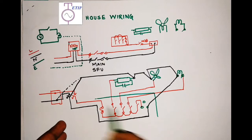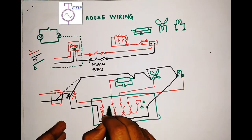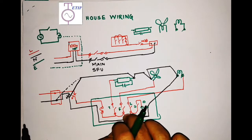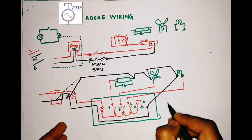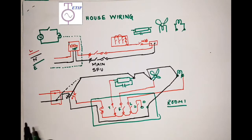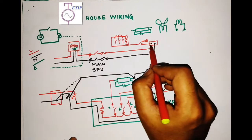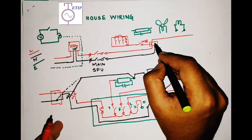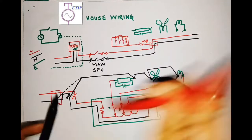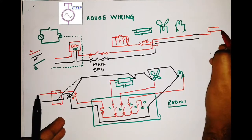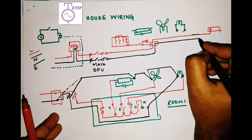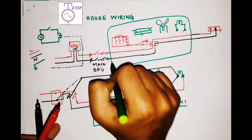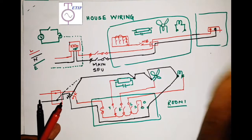So your switchboard will have switches for the tube light, fan, lamp, and socket — by operating each switch you can control the respective load. This completes room one. For a second room, you take another line wire and neutral wire from the junction box and create a new junction box in the second room, then repeat the same design.